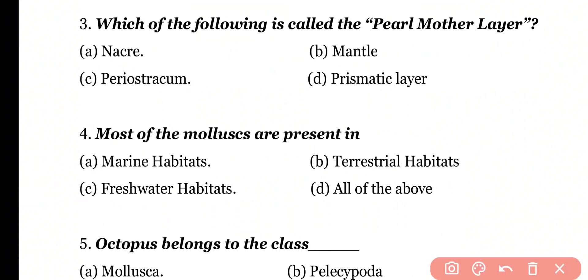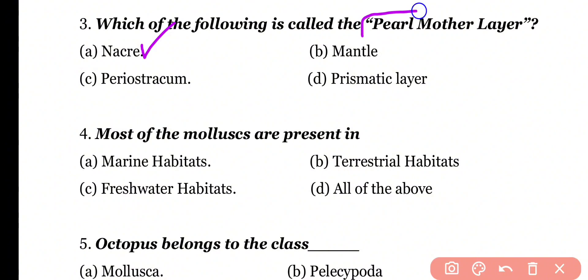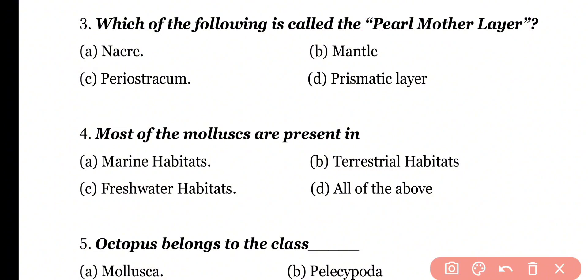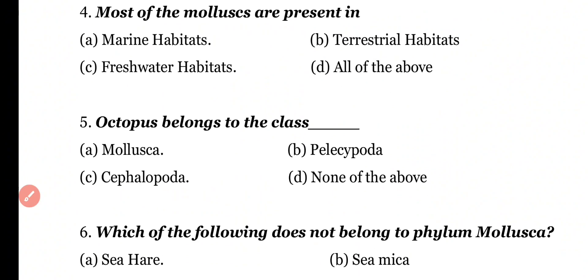Question number 3: Which of the following is called the Mother of Pearl layer? Options: Necromantle, Periostrachum, Prismatic Layer. Correct answer is option A. Necromantle is called the Mother of Pearl layer. So the correct answer is option A.